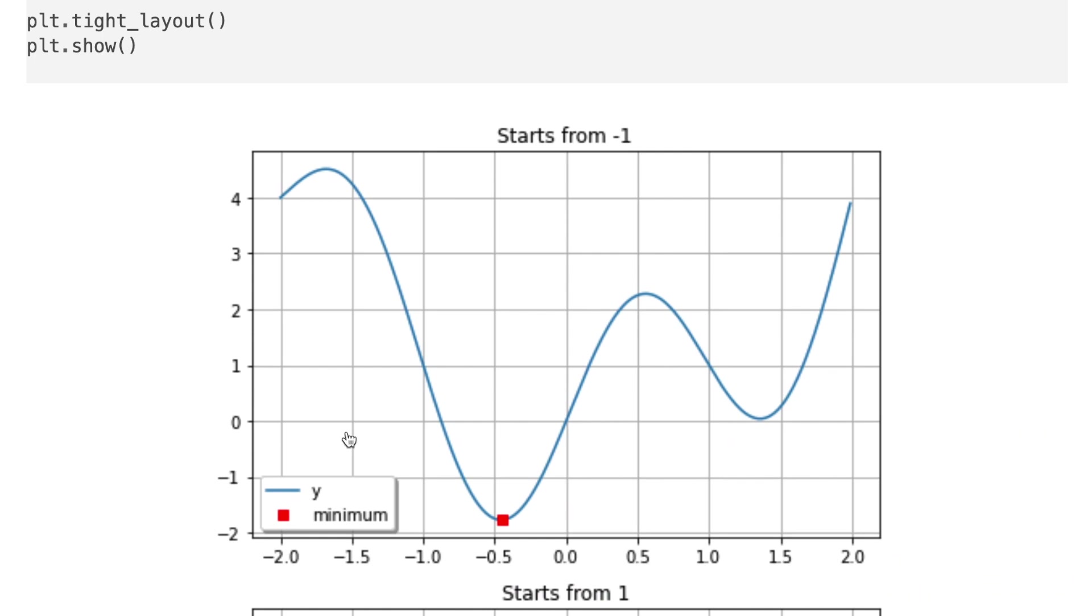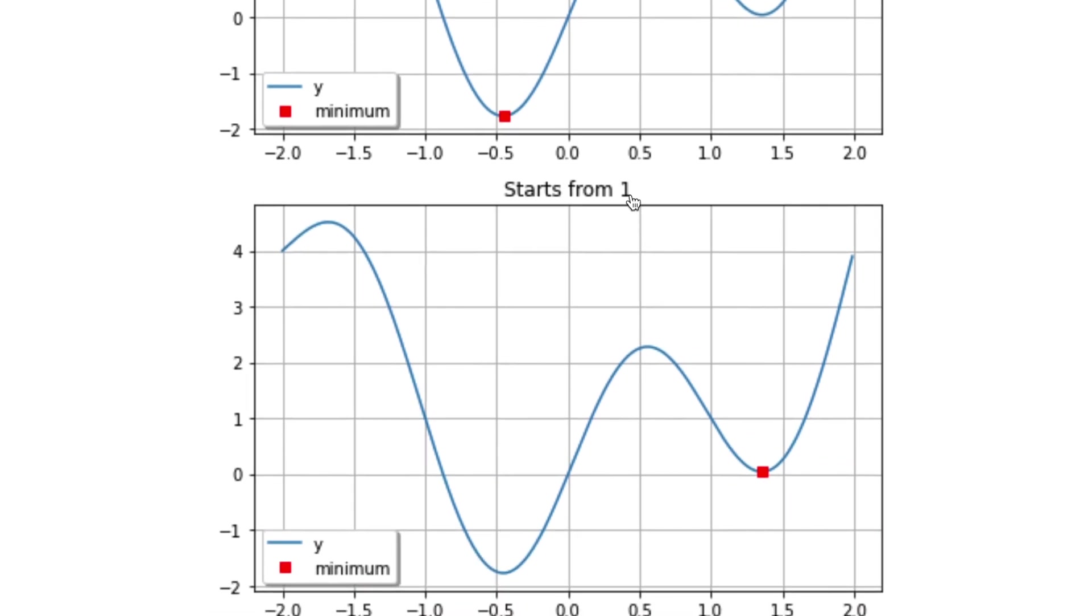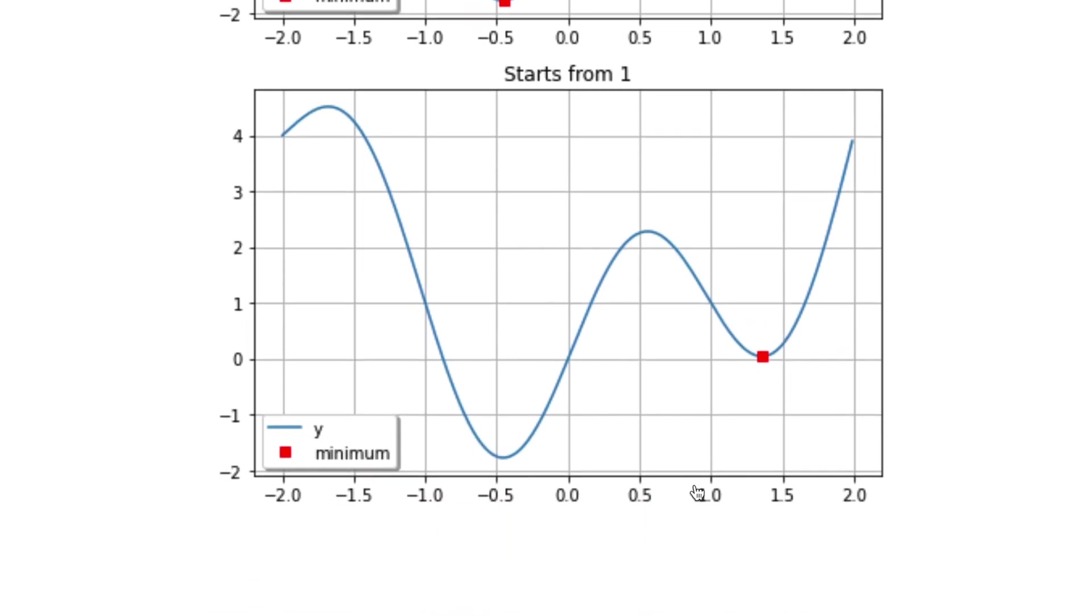The first one starts from minus one. We detected it here. The second one starts from one. So we start from here and the function detects the minimum here.